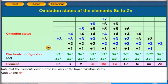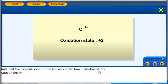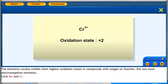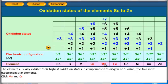Note that the elements exist as free ions only at the lower oxidation states. The elements usually exhibit their highest oxidation states in compounds with oxygen or fluorine, the two most electronegative elements.